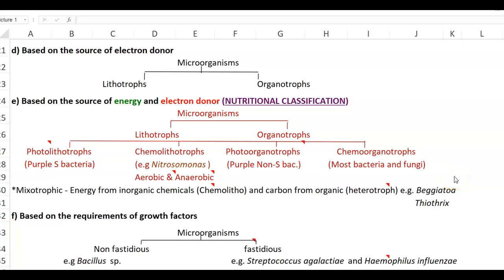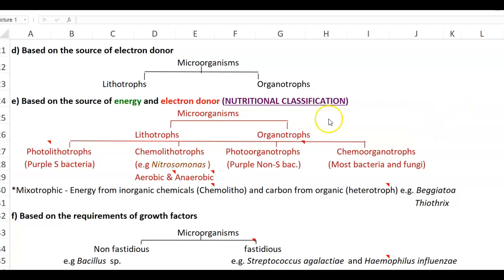In this video lecture we will first recollect what we have learned in previous lectures. Based on the source of electron donor, microorganisms can be divided into lithotrophs as well as organotrophs. This leads to the major classification based on energy and electron donor — the nutritional classification of four groups of organisms.